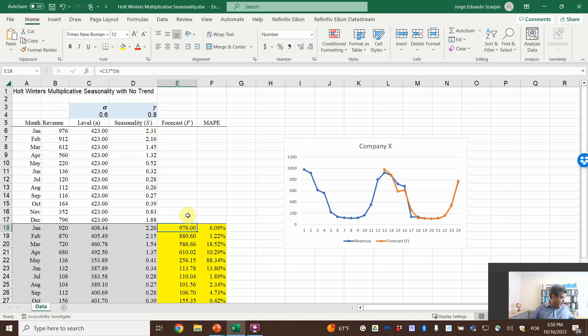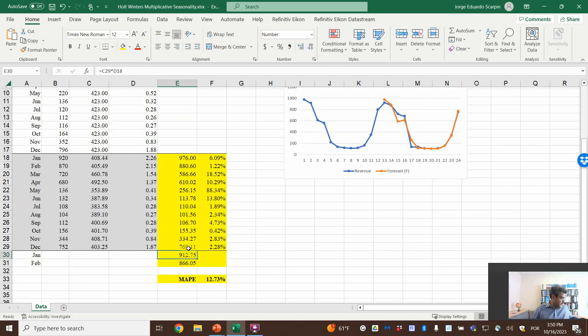And then here we have the forecast, which is the previous At multiplied by the first seasonality. For the new numbers, the first one, we just follow the lead: At multiplied by the old seasonality. However, for the second one, because T is now 2, it's At multiplied by St minus S plus 2. And for March, it would be times this number here. This is the seasonal component.